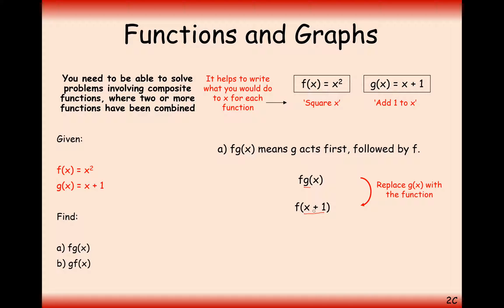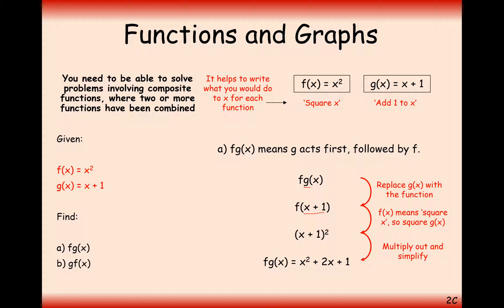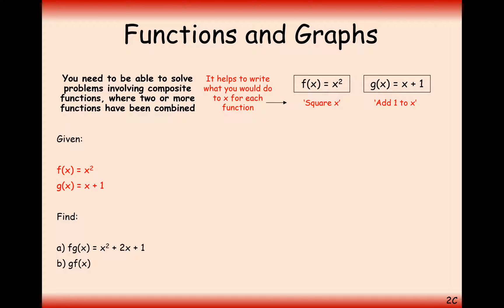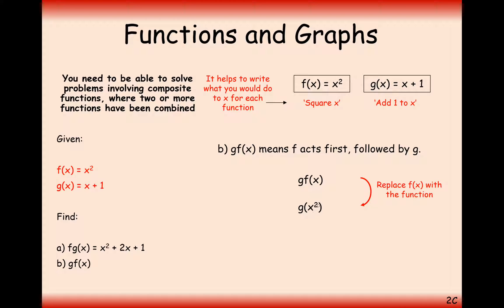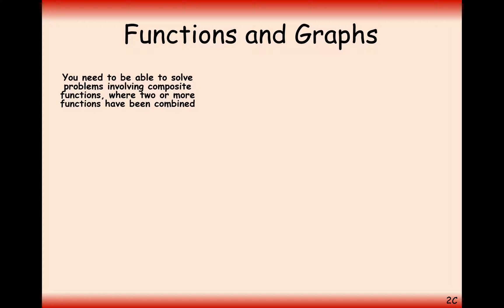Now with this x + 1, we've got to apply the f function. The f function squares different values, so we need to square this x + 1 value — (x + 1)² — and we can expand this to get fg(x) = x² + 2x + 1. Now let's do it the other way around. We need to first apply the f function of squaring the value inside the bracket. The x gets turned into x² because f squares things. Now we apply the g function, which adds 1 to whatever's in the bracket, so it's just x² + 1.